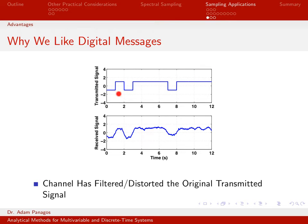It would be nice if the transmitted message looked exactly the same when received, but that never really happens. Due to communication over a channel medium, what we actually receive will look something like this distorted version. The physical medium we transmit over — whether it's air for wireless communication, copper wires, or fiber optics — almost always introduces distortions to our signal. The received signal no longer has crisp corners; noise has been added and it's been distorted quite a bit.